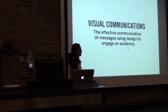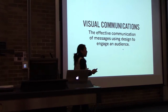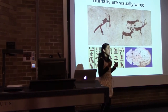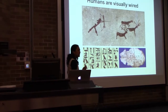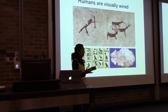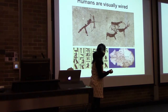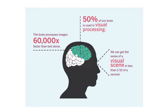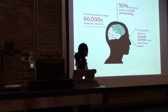Let's rewind a little in history to understand visual communications from a behavioural science point of view. Humans are visually wired — 70% of our sensory receptors are in our eyes. From the earliest of times we used our sensory organs to hunt and to mate. One of the first forms of communication were images: cave paintings, hieroglyphics, oracle bone drawings in China, which later developed into language. 50% of our brain is used in visual processing, and the brain processes images 60,000 times faster than text alone. We can grasp a visual scene in less than one-tenth of a second.